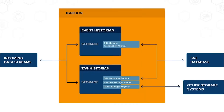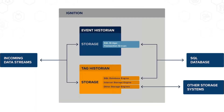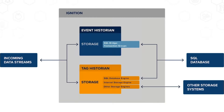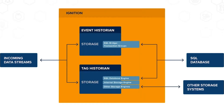Event historian data goes directly to SQL databases. Looking at the tag historian, there are several options: the SQL database engine, the internal storage engine, and other storage engines. The term 'engine' isn't official terminology from Inductive Automation — it's used here to clarify what those components are doing. They plug into the tag historian as different ways to get data into some storage medium.